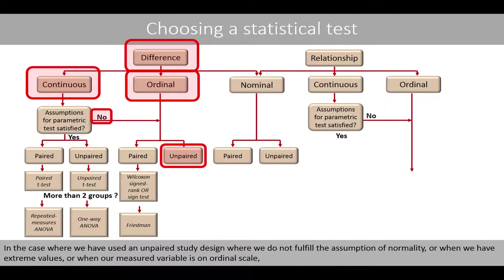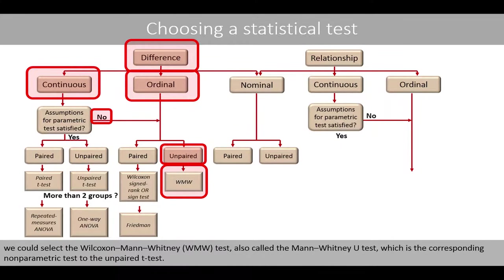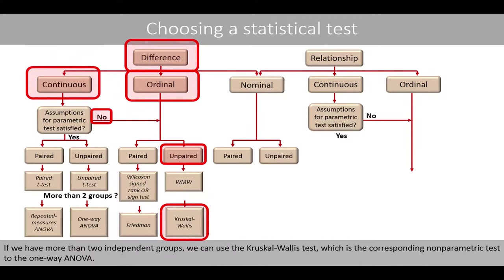In the case where we have an unpaired study design and do not fulfill the assumption of normality, or when we have extreme values, or when our measured variable is on ordinal scale, we could select the Wilcoxon–Mann–Whitney test, also called the Mann–Whitney U test, which is the corresponding nonparametric test to the unpaired t-test. If we have more than two independent groups, we can use the Kruskal–Wallis test, which is the corresponding nonparametric test to the one-way ANOVA.